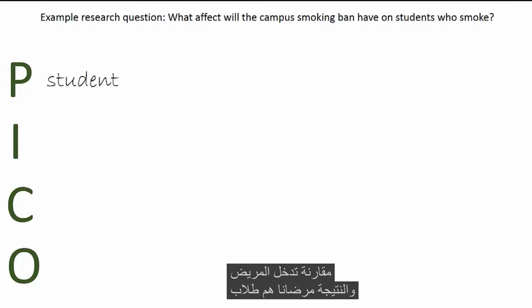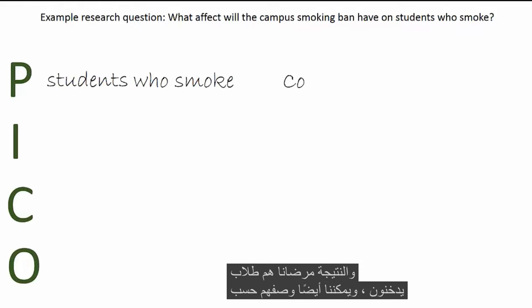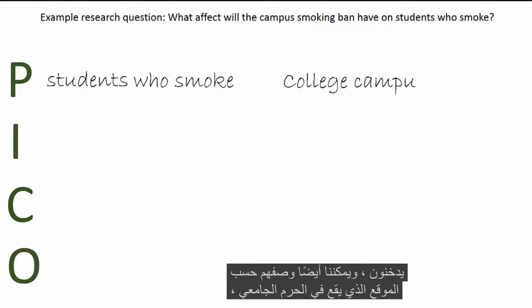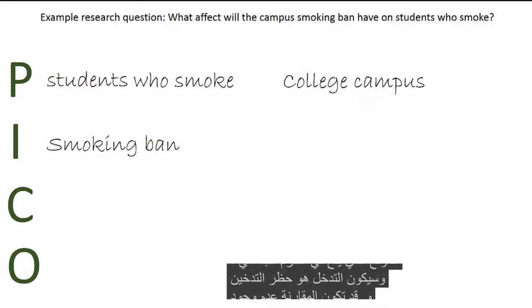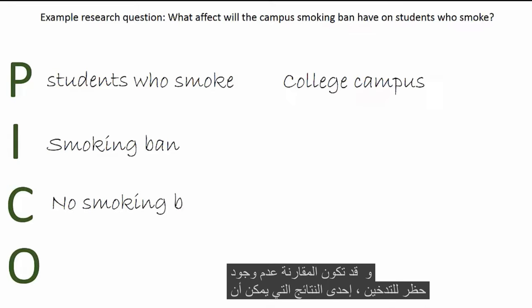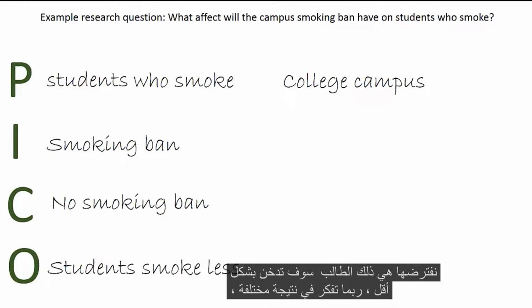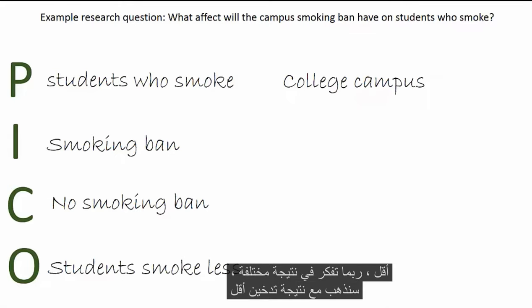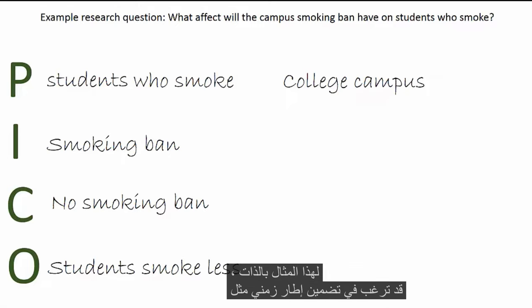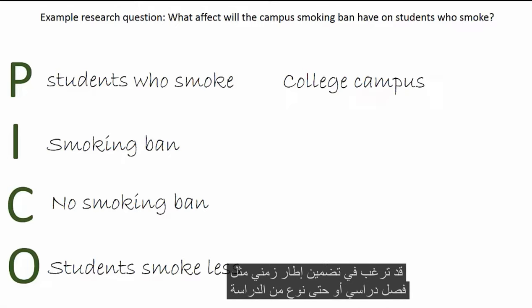Our patients are students who smoke. We can also describe them by location, which is college campus. The intervention would be the smoking ban, and a comparison could be not having a smoking ban. One outcome we could hypothesize is that students will smoke less. You may want to include a time frame such as a semester or even a type of study, but we'll skip those for now.